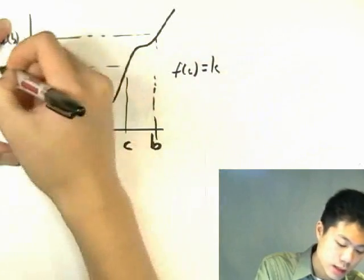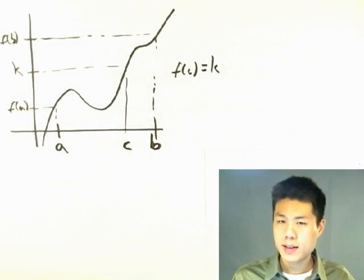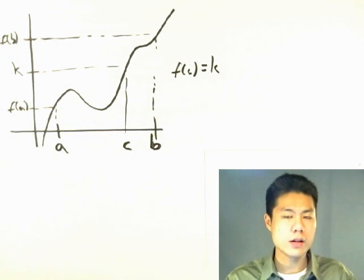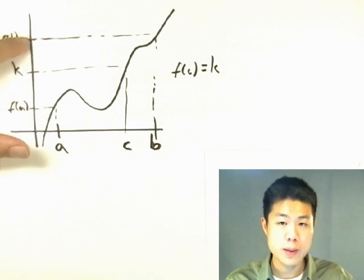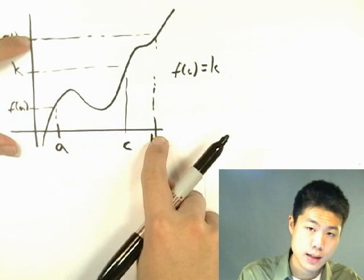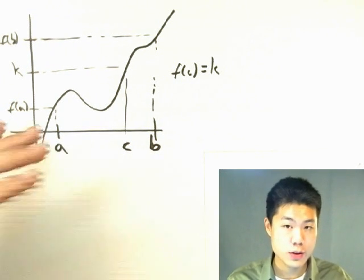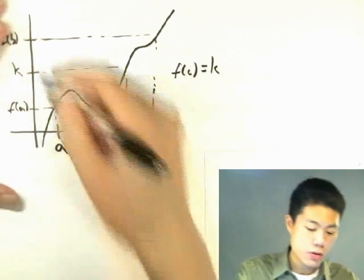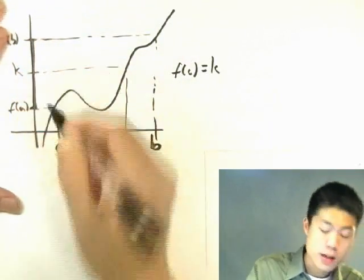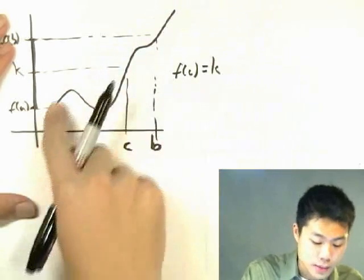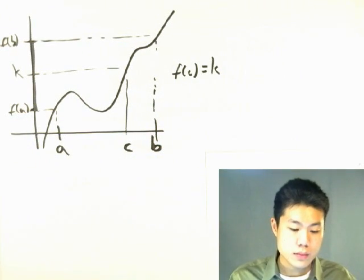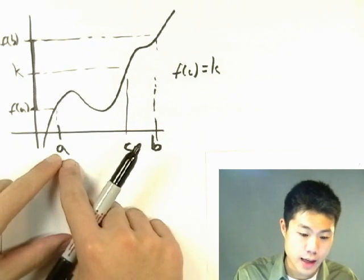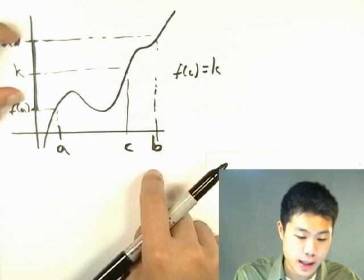I think the wording makes it a bit harder than it really is. What this theorem is basically saying is that between f(a) and f(b), the function has to pass through every value between f(a) and f(b), between a and b. Because for a continuous function to travel from f(a) to f(b), it has to pass through every number in between — there are no jumps. It can't just jump up. So for a continuous function, if x exists between a and b, then every value between f(a) and f(b) will be passed through.